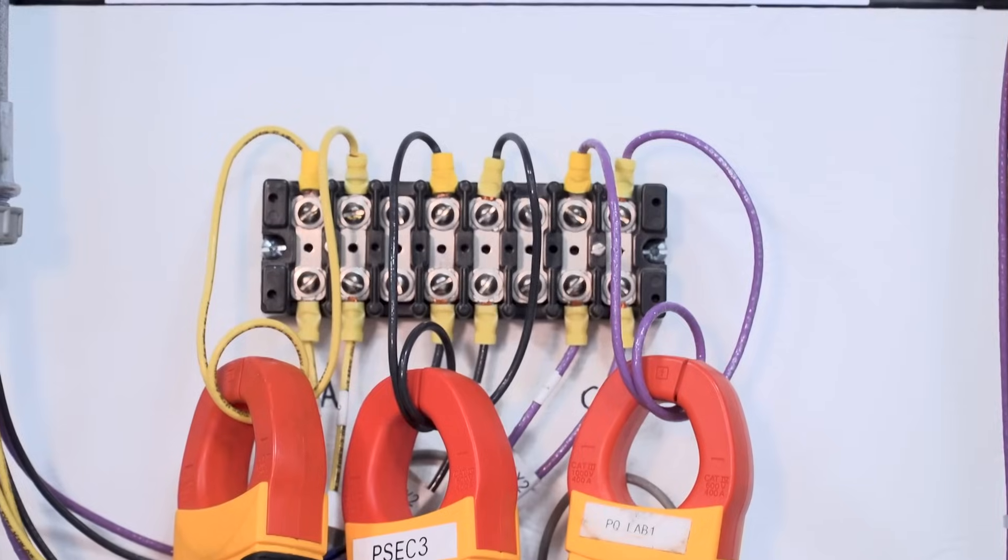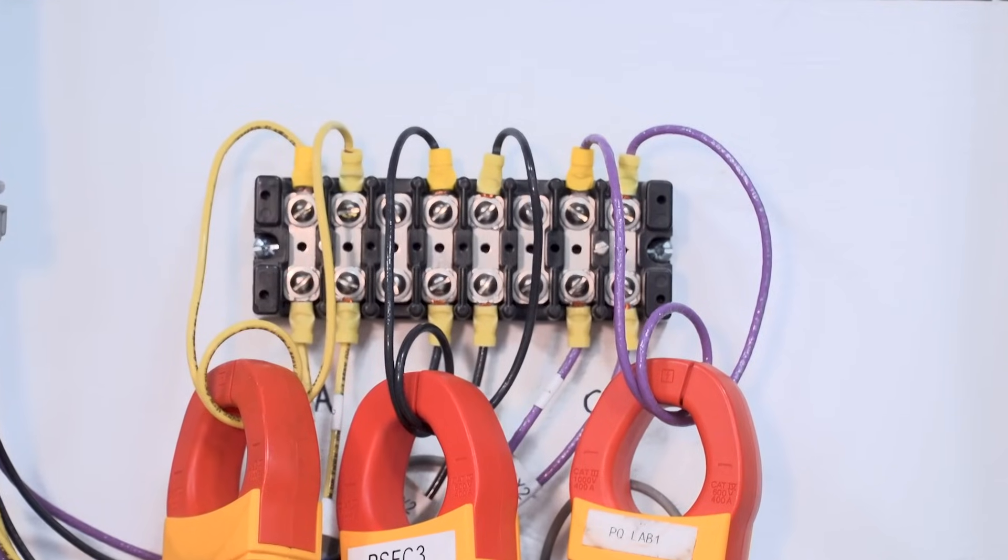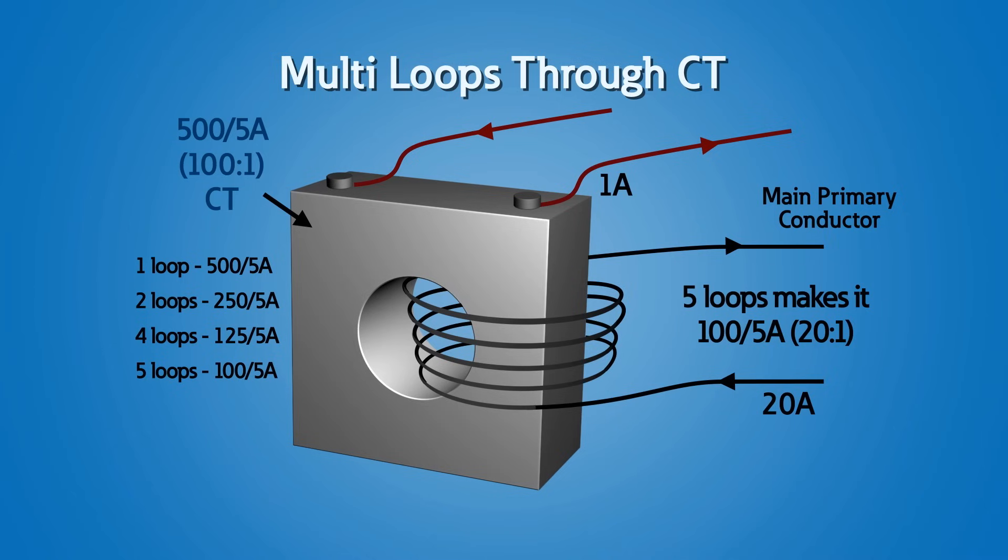Sometimes the current value is too small. A CT may not be accurate at less than 10% of its full load rating, so one way to increase the amount of current flowing through the core, especially for temporary metering, is to loop the primary wire several times through the core. For example, for a 500 to 5 amp CT or 100 to 1 ratio, looping the wire five times through the core will make the CT ratio 100 to 5 amps. So if 20 amps of current is flowing on the primary circuit instead of 0.2 amps, 1 amp of current will flow on the secondary, making the measurement more accurate.